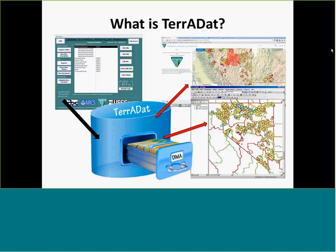The first thing I wanted to go over is what exactly is Terradat. The name comes from Terrestrial AIM Database, and it is an enterprise database here at the NOC that stores all the DEMAs. Field crews still use DEMA as the field collecting tool, and then at the end of the session, after some localized QAQC processes at the field office, it will move to the state office and then come to the NOC, where we ingest it into an enterprise database. The data is each indicator for each plot calculated — so it's not the raw data, it's the sum of calculated data for each point.